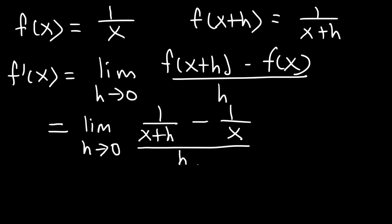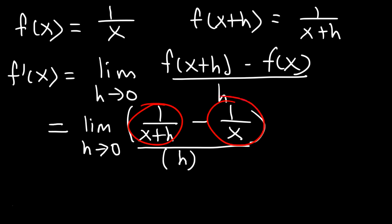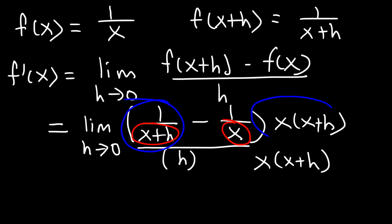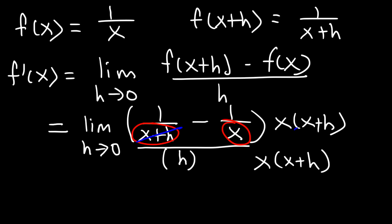If you have a complex fraction, multiply the top and the bottom by the common denominator of these two fractions. So the common denominator is going to be x times x plus h. Whatever you do to the top, you must also do to the bottom of the complex fraction. If we take this fraction and multiply it by x times x plus h, the x plus h terms will cancel, eliminating this fraction, and what we have left over is simply x.